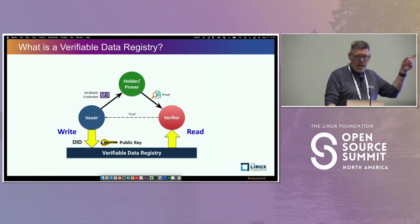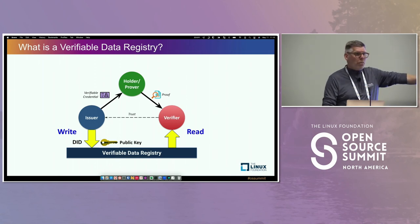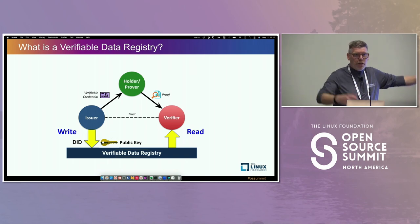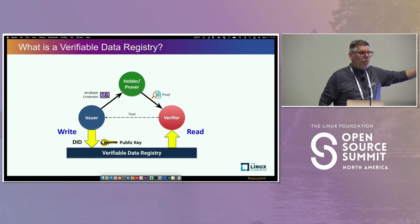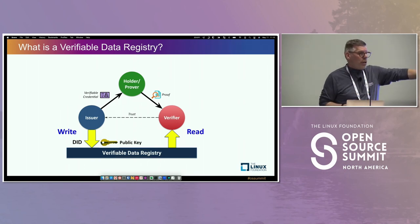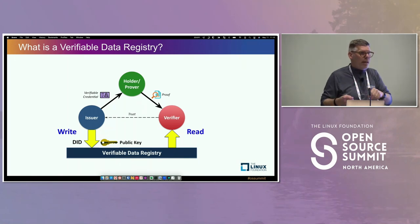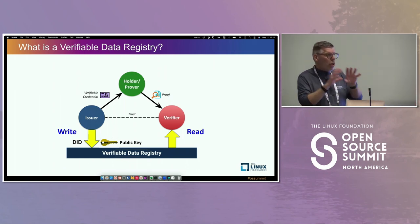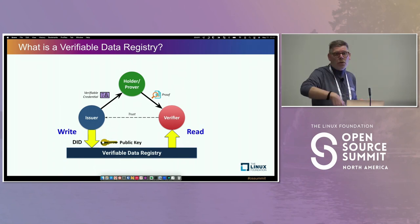The verifiable data registry is how the verifier doesn't call home to the issuer every time they verify. Before issuing a credential, the issuer publishes to some public place the keys necessary to verify the presentation. So instead of the verifier calling the issuer for the public key, it goes to some neutral place — often a blockchain, but it can be a ledger, a database, an API, DNS, or a web server — as long as it's public and the verifier can get to it.